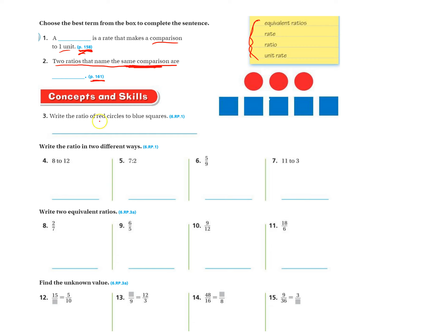Number three, write the ratio of red circles to blue squares. So the number of red is going to be first, so that's three. And then the number of blue squares is second, one, two, three, four, five, three to five.